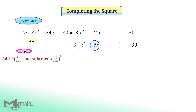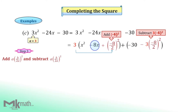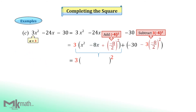Step 3: add half the coefficient of the x term squared and then subtract the same value to keep the original expression. Add minus 4 squared inside the bracket and subtract 3 times minus 4 squared outside. Now make the squared form for the first bracket group. Please keep 3 in front of the bracket. Take x from the first term and take negative 4 from the last term. Then simplify the second bracket group: minus 30 minus 48, which is negative 78.